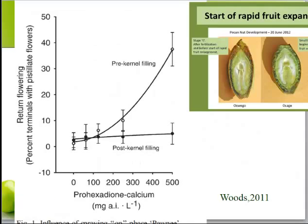Here is a recent study indicating gibberellin's role in alternate bearing. Bruce Woods applied prohexadione calcium, which is a metabolic inhibitor of gibberellin synthesis, to on-phase trees at the pre-kerneling stage in mid-July, and to another set of trees at a post-kerneling stage in mid-August. Applying the chemicals pre-kerneling increased return bloom in the next off-phase year, as shown in the graph. However, if the gibberellin inhibitor is applied after kernel filling in mid-August, there is no effect on the next year's pistillate flower crop. These data indicate that gibberellin activity early in the season can inhibit bloom the next year.